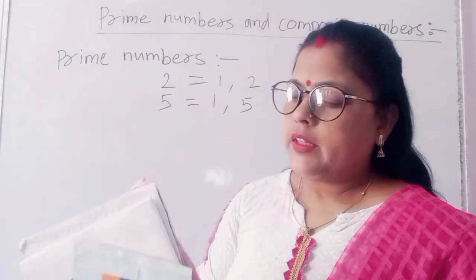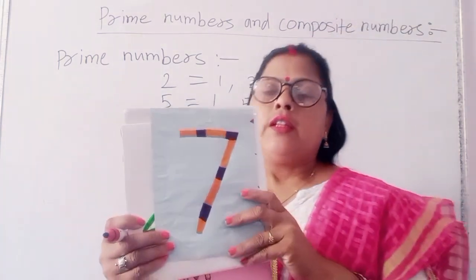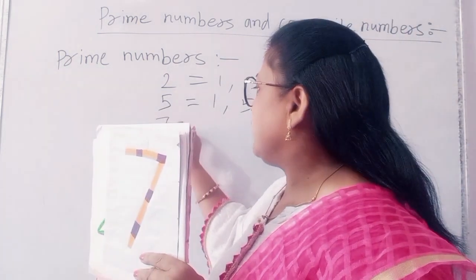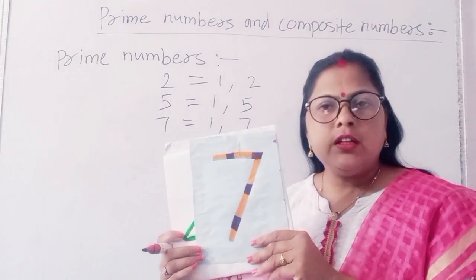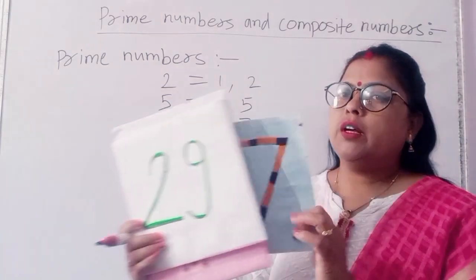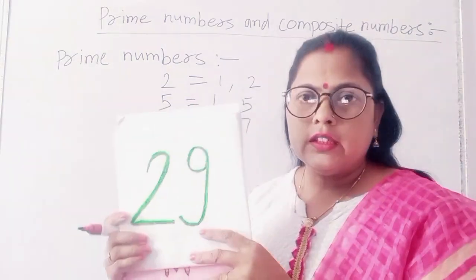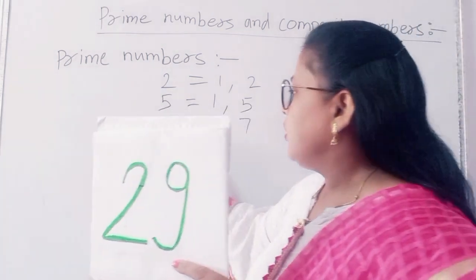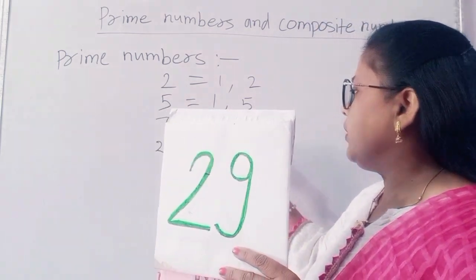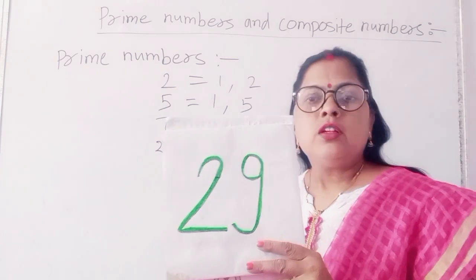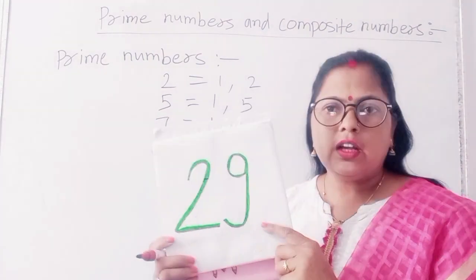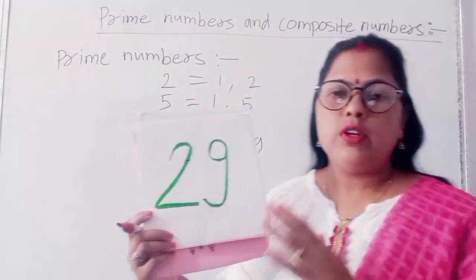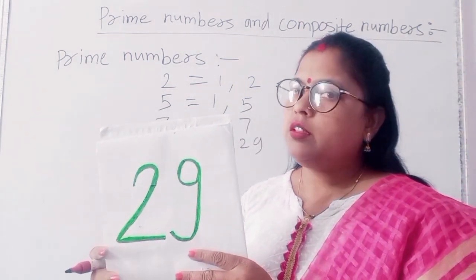The next number is 7. Seven is also a prime number because it has only 2 factors: 1 and 7. The next number is 29. Is 29 a prime number or composite number? First I will find the factor of 29. The factor of 29 is 1 and 29, so here are only 2 factors. This means 29 is also a prime number. Numbers which have only 2 factors are called prime numbers.